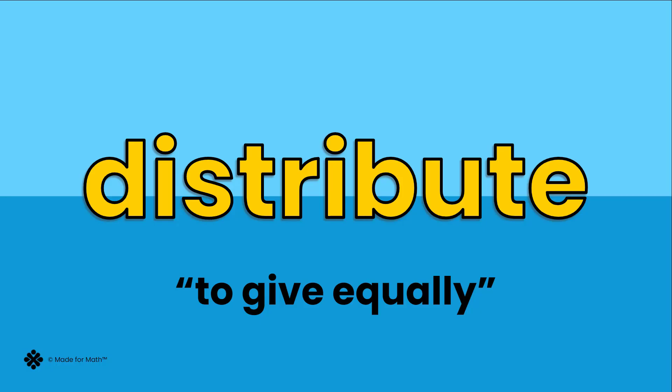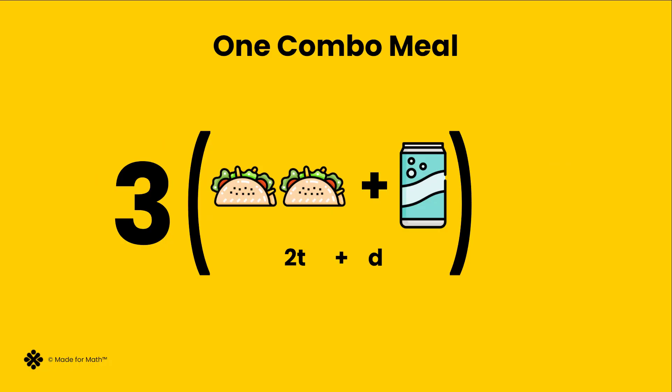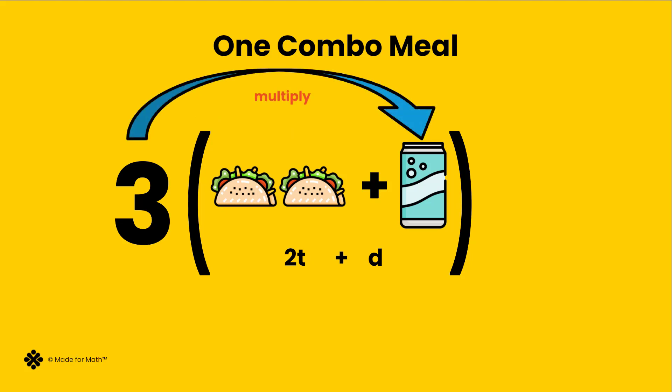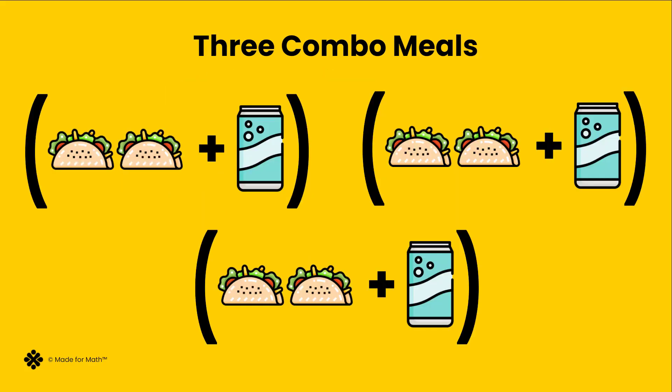Let's distribute the three. This means I am going to multiply three equally to each item in the combo meal — three times two tacos and three times the drink. When we distribute, we share, or multiply equally to each group in parentheses.